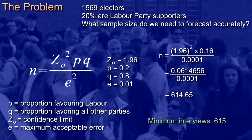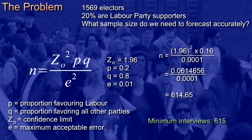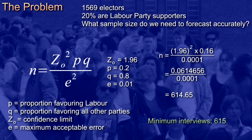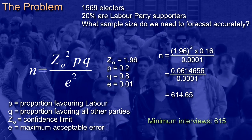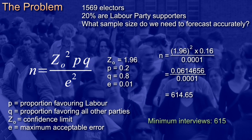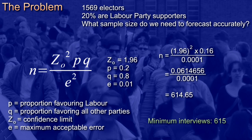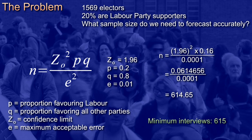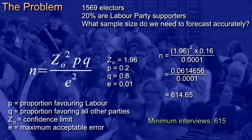What difference would it make if the electorate had been 5,000 people? For large numbers, the sample size is independent of the size of the whole population. And what if 30% rather than 20% had been Labour Party supporters? The answer is quite a bit — you might rework the formula to discover the necessary number.